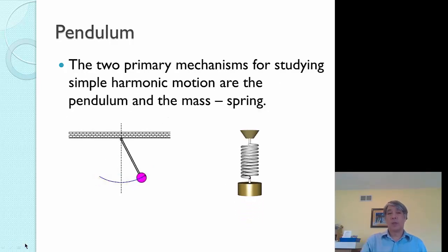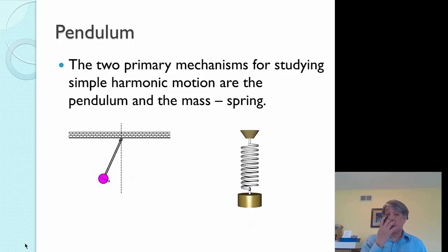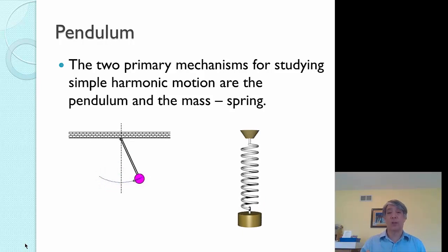So the two primary mechanisms that we're going to use to study simple harmonic motion are these two. The one on the left is a pendulum, a mass hanging on the end of a massless string. And the other one is this mass spring, could be horizontal or vertical as in this case. Either way we'll be ignoring friction in these systems.